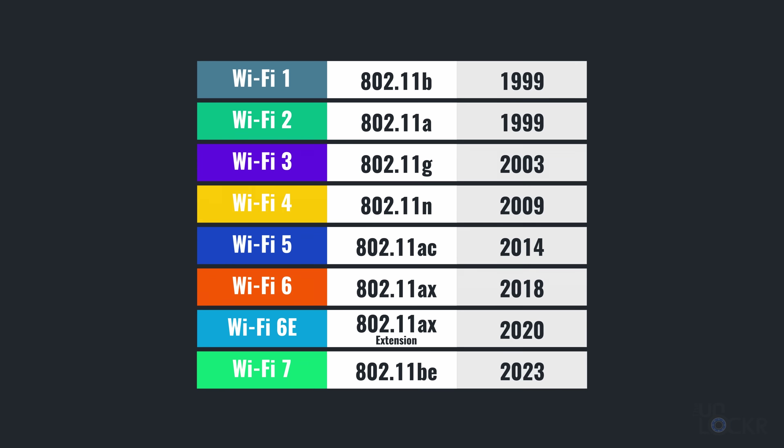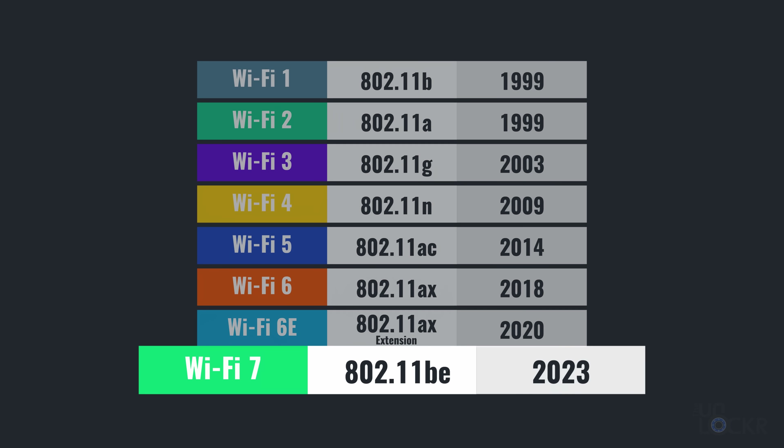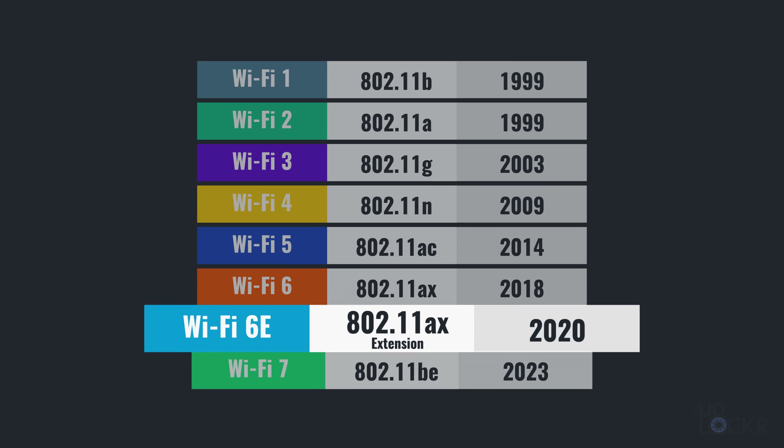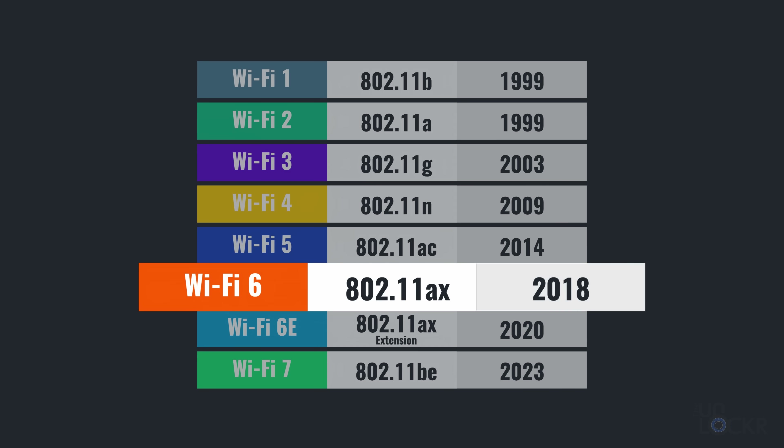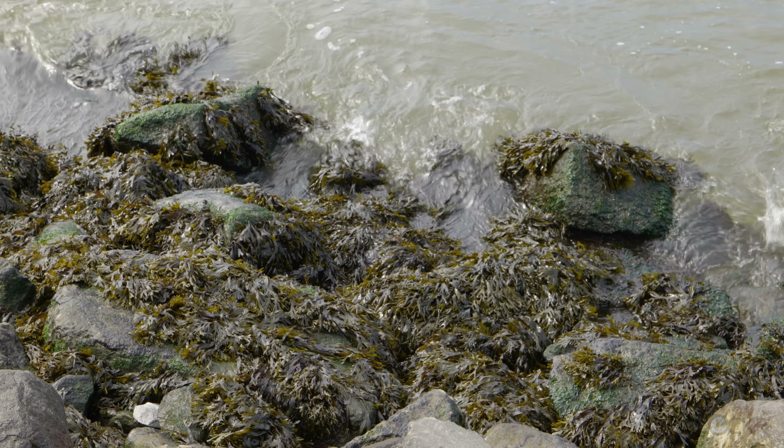First, let's start with the name. Wi-Fi 7 is part of a relatively new naming structure from the Wi-Fi Alliance, the industry body that tests and certifies Wi-Fi products to help people understand the different Wi-Fi standards. Wi-Fi 7 is the name now for 802.11BE, where 6E was the name for 802.11AX extension, and 6 was 802.11AX, and so on.